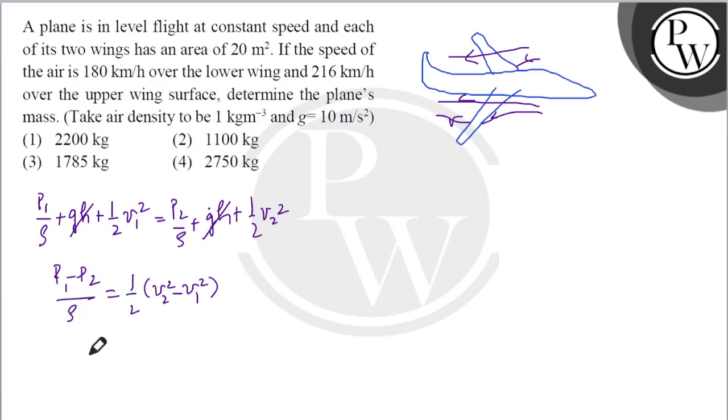This means (p1 - p2)/ρ = (1/2)(v2² - v1²). Therefore, p1 - p2 = (1/2)ρ(v2² - v1²). This gives us the pressure difference.